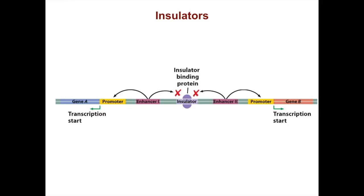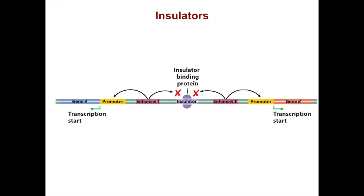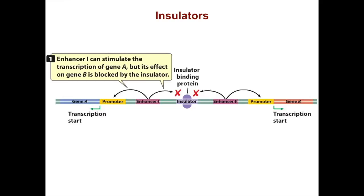Eukaryotic chromosomes contain many genes and have a much more complicated organization than prokaryotes. For example, you can have two genes near each other that are in the opposite orientation and can be independently transcribed. Enhancer 1 can stimulate the transcription of gene A, but its effect on gene B is blocked by the insulator. By the same token, enhancer 2 can stimulate the transcription of gene B, but its effect on gene A is blocked by the insulator. This makes insulators a very important part of eukaryotic gene regulation.